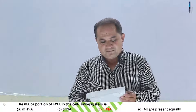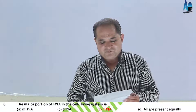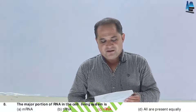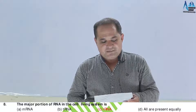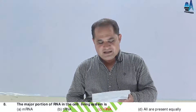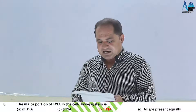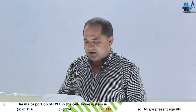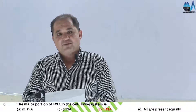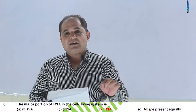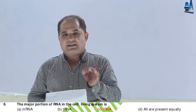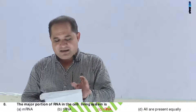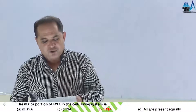Question number 8. The major portion of RNA in the cell or living system is: A, mRNA; B, tRNA; C, rRNA; D, all present equally. Most of the RNA is rRNA — approximately 70%. Answer should be C.